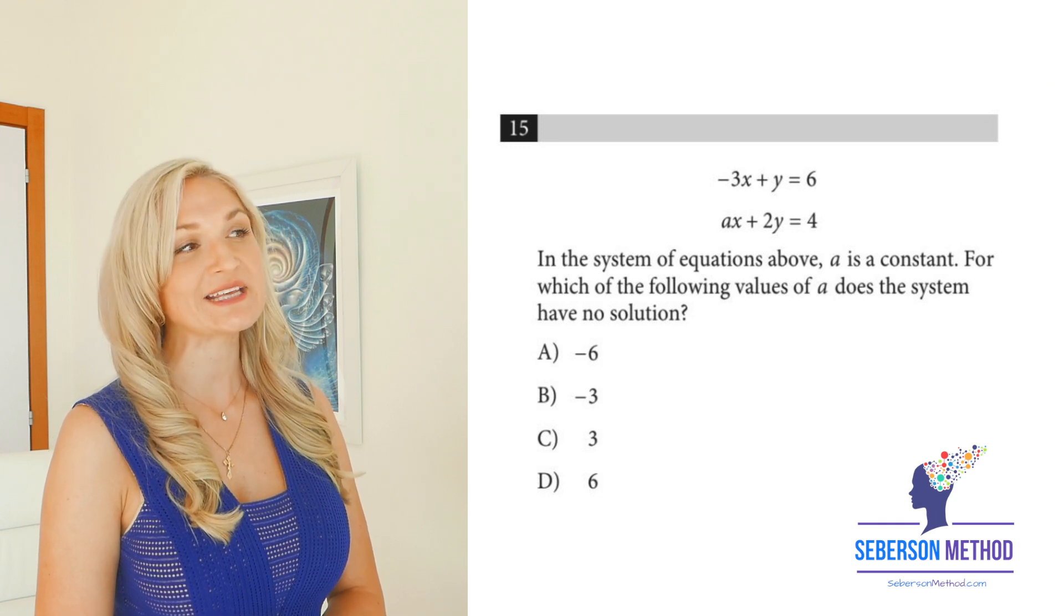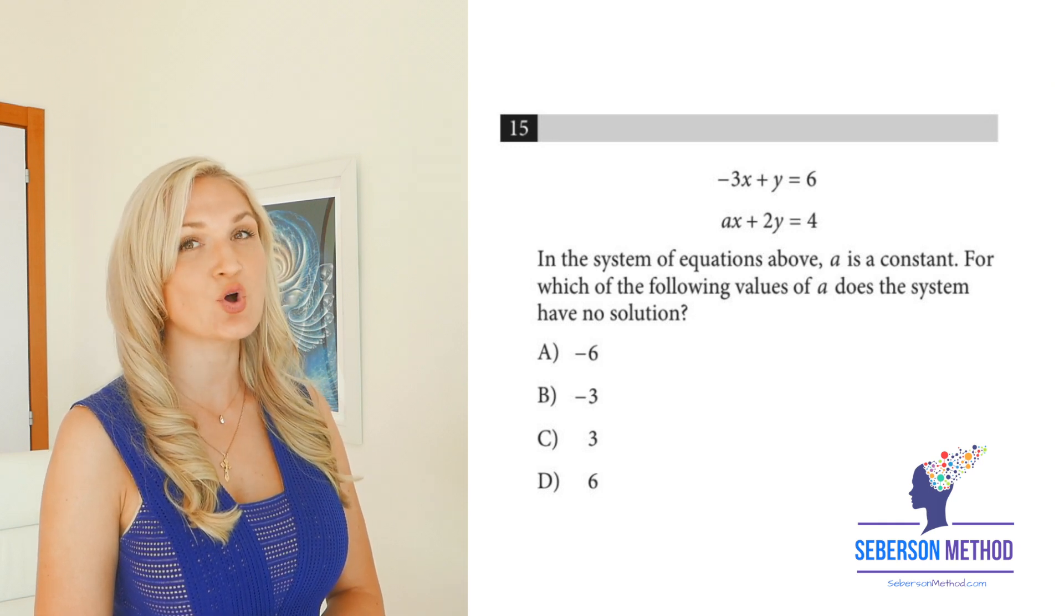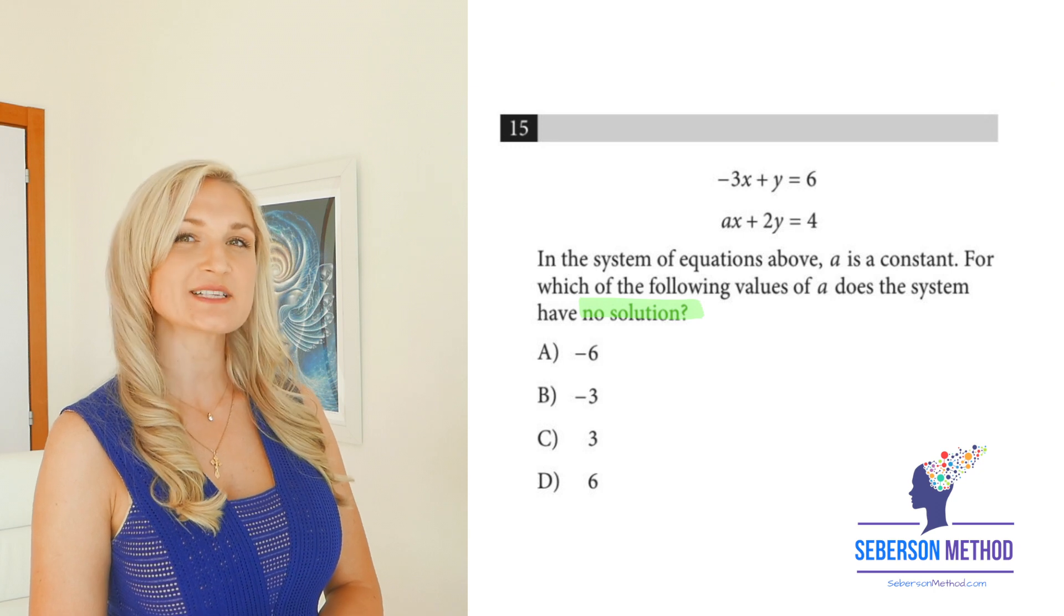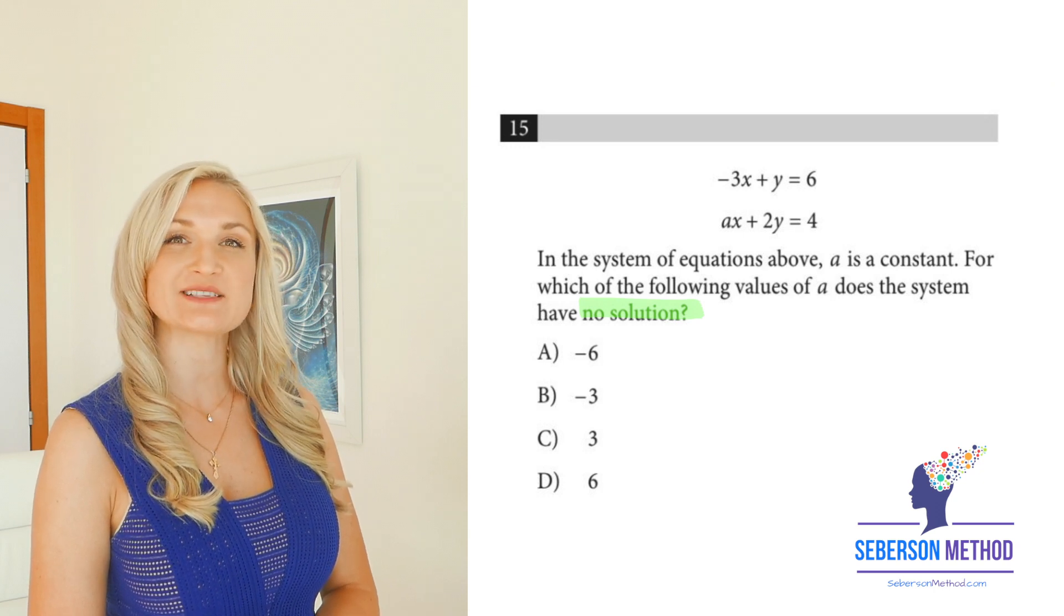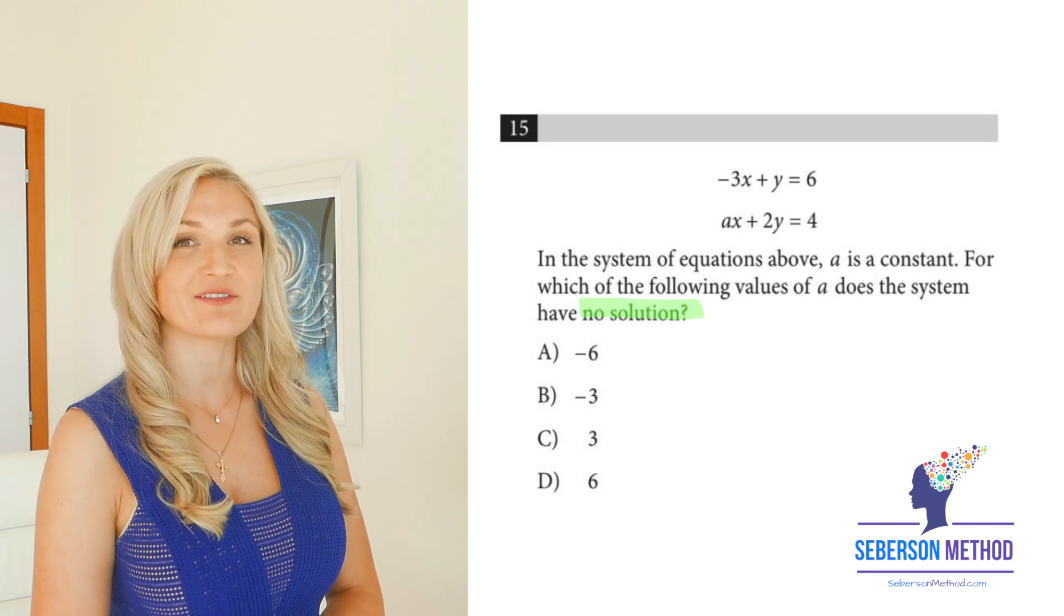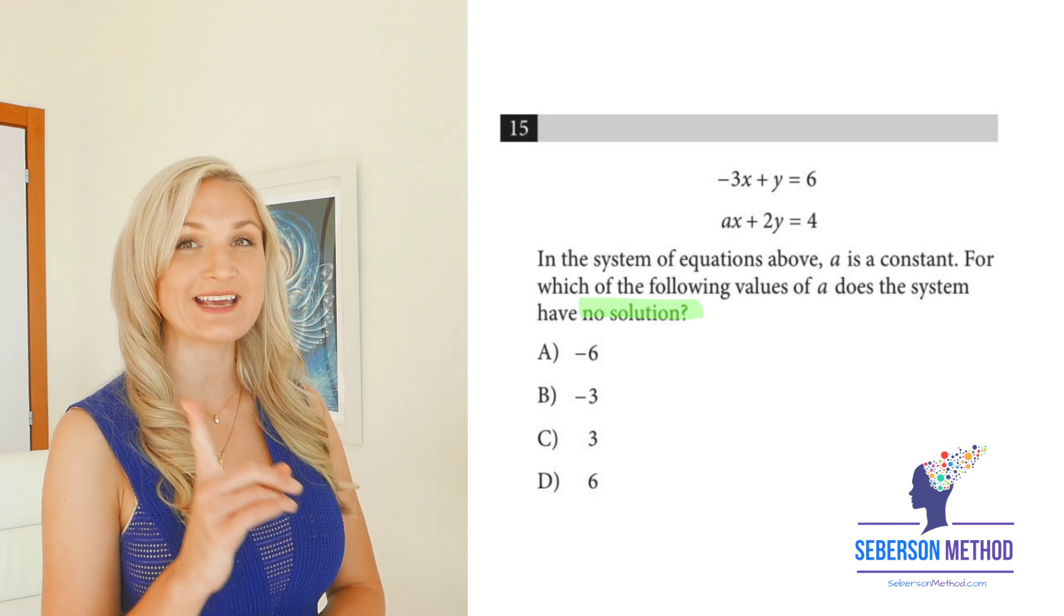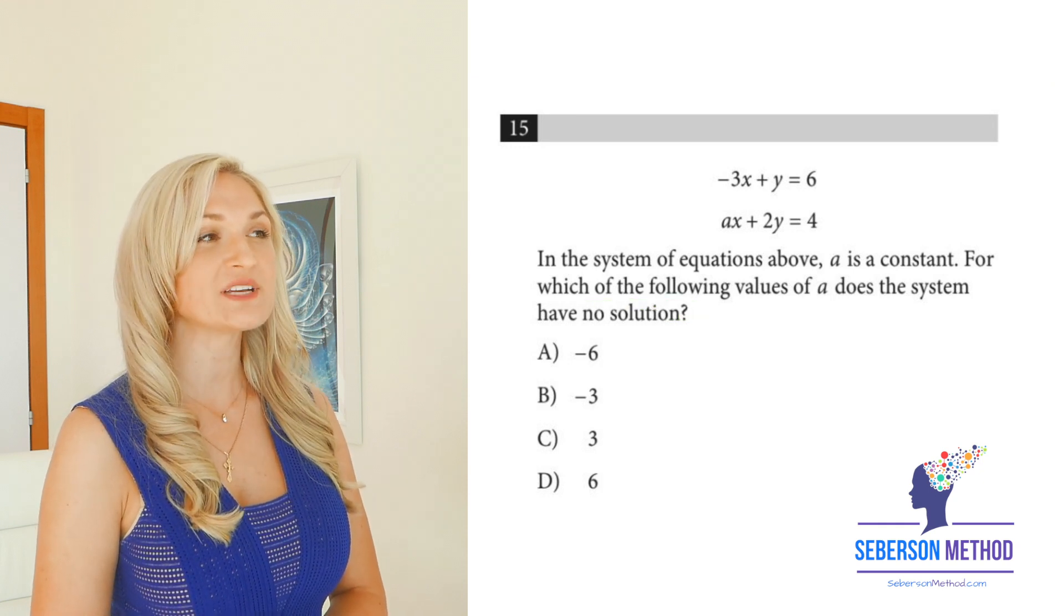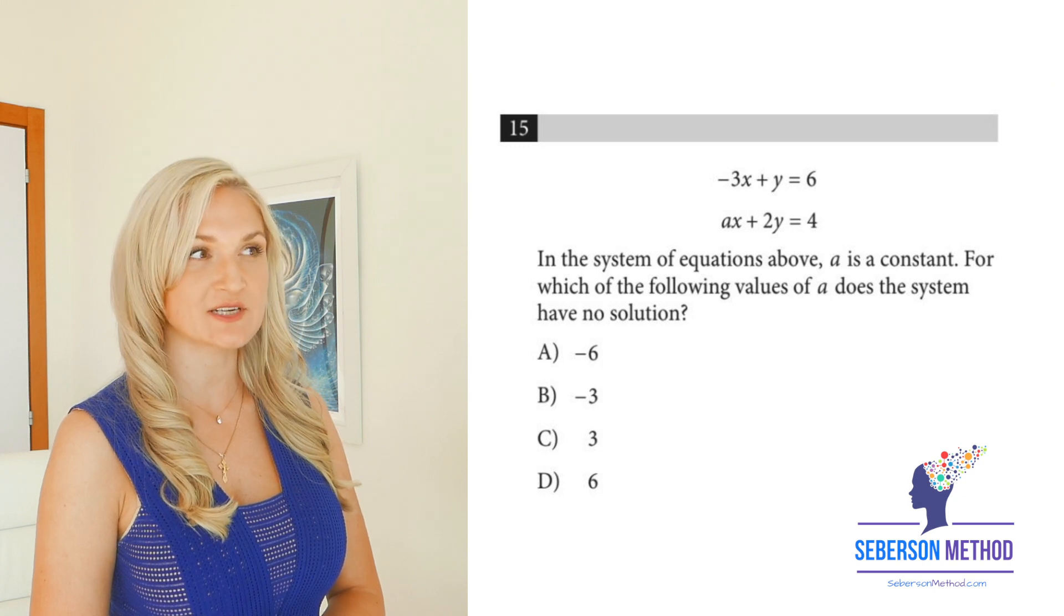Here we know that the system has no solution. What does that mean, no solution? That means these two linear equations have the same slope, yet they have a different y-intercept. What is the slope for the first equation?